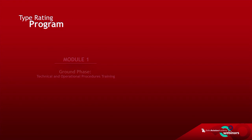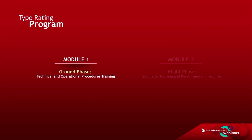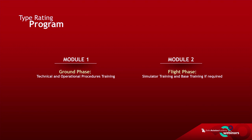The type rating program consists of two modules: the ground phase — technical and operational procedures training — and the flight phase — simulator training and base training if required.